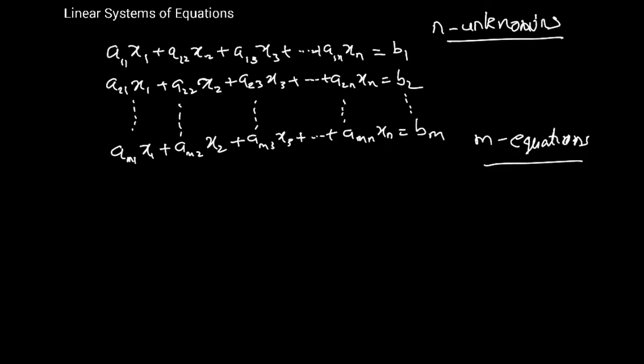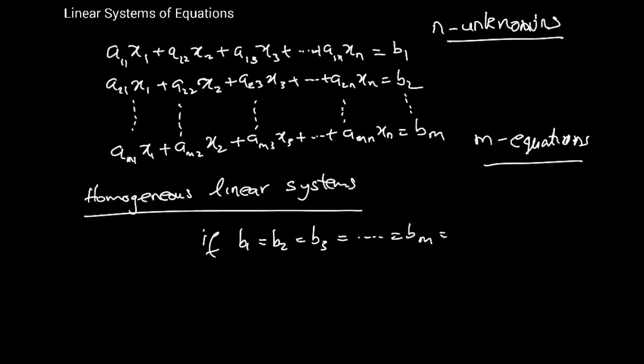Now let's look at homogeneous linear equations or homogeneous linear systems of equations. What I mean by homogeneous linear systems is if b1 equals b2 equals b3 equals all the way up to bm, all of these are 0. That's a very unique, very special situation where all the right hand sides of all the equations are 0. Such a system is referred to as a homogeneous system. They have certain interesting properties. I just want you to get an idea of the definition of homogeneous linear system.